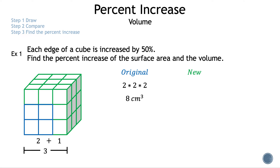The volume of the new cube is length × width × height = 3 × 3 × 3 = 27, so the volume of our new cube is 27 cm³.